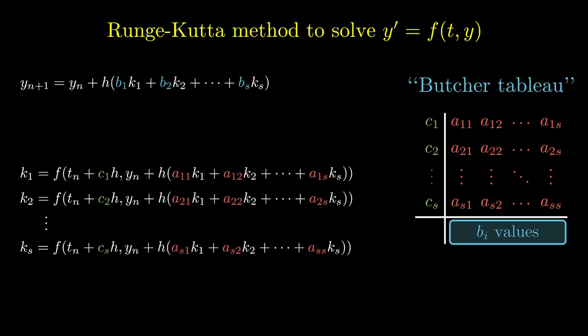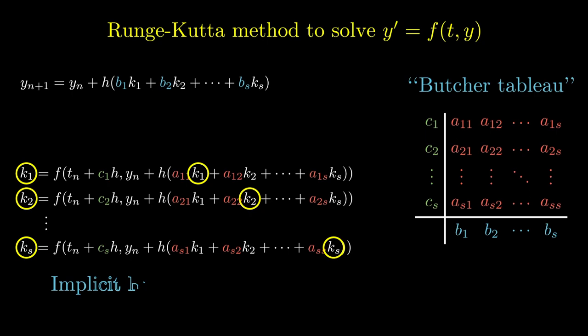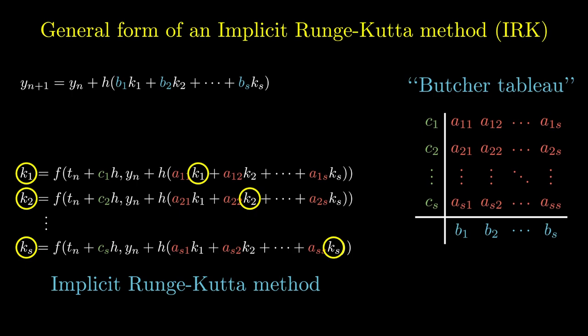Looking at the expressions for k_1, k_2, up to k_s, we note that the value of k_i is included in the right-hand side of the expression for k_i and similar for k_2 up to k_s. So as it stands, here the stage values are implicit relationships. So a Runge-Kutta method in this form is known as an implicit Runge-Kutta method or IRK for short.